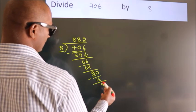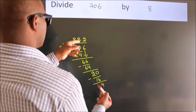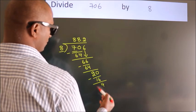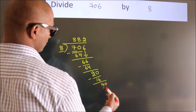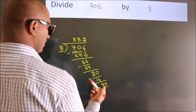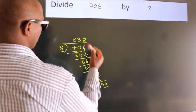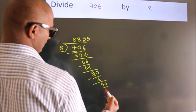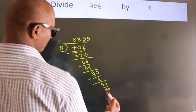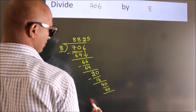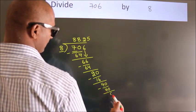After this, we already have the decimal. So, directly take 0. So, 40. When do we get 40 in 8 table? 8 5s 40. Now, we subtract. We get 0.